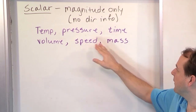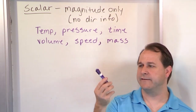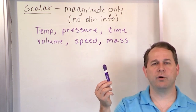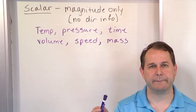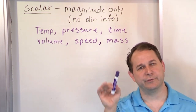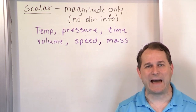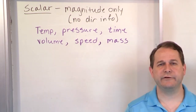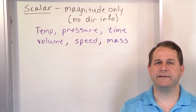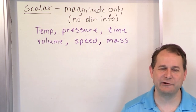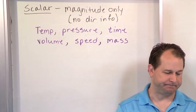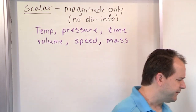Speed we already talked about, and mass. This marker has a mass of 0.05 kilograms, but it's not pointing any direction. It's just a value that we give, a magnitude. So scalars are things you've dealt with all your life — they're not pointing any particular direction, they're just values.